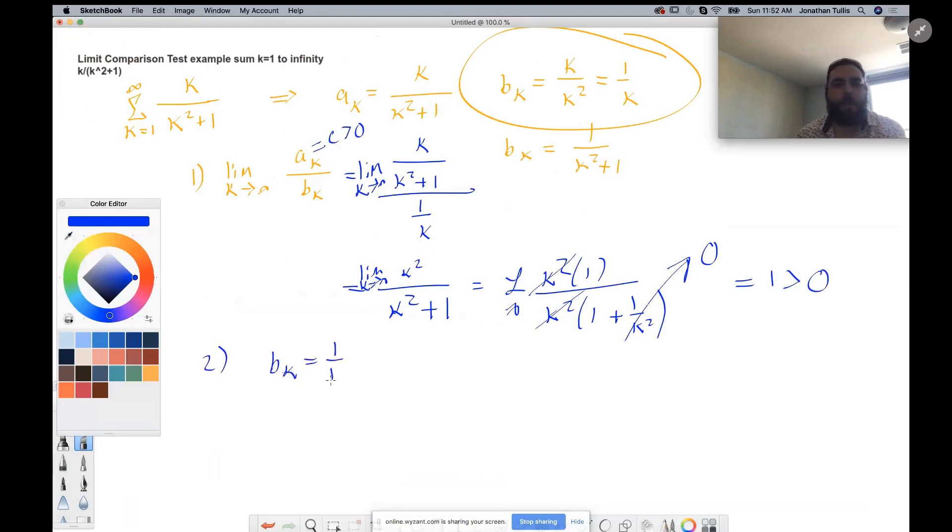So bk is one over k, which implies it's one over k to the one. So then by p series, bk diverges by p series.